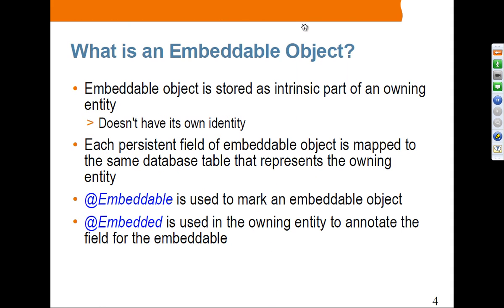So let's talk about embeddable objects. An embeddable object is stored as an intrinsic part of an owning entity. An embeddable object is not an entity, so it doesn't have its own identity. All the fields in an embeddable object will be mapped to the same database table of the parent entity that owns it. To embed an embeddable object you use the @Embedded annotation, and for the embeddable object itself you use the @Embeddable annotation.